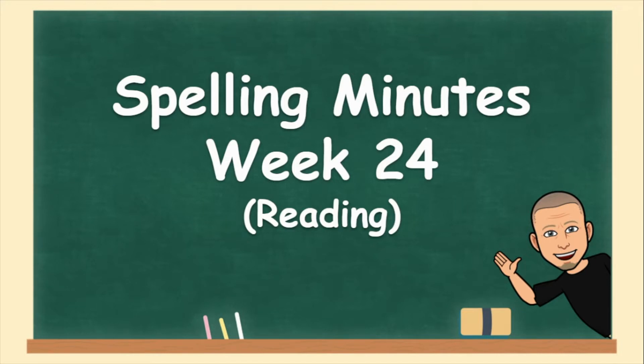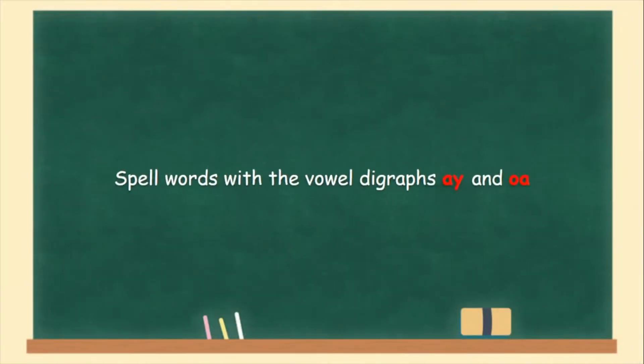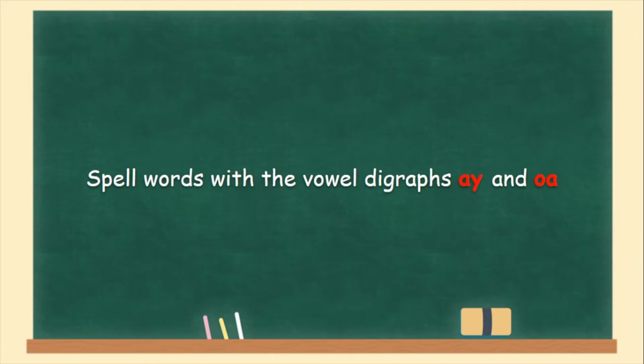Alright everybody, let's check out what is up this week. This week, we're going to spell words with the vowel digraphs A-Y and O-A. A-Y is A, O-A is O-L.